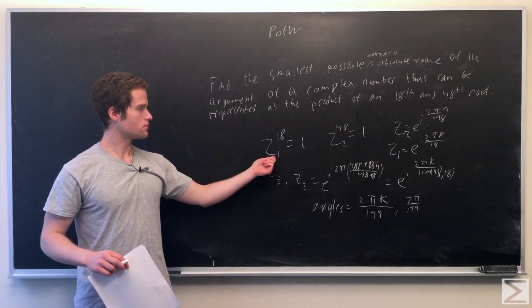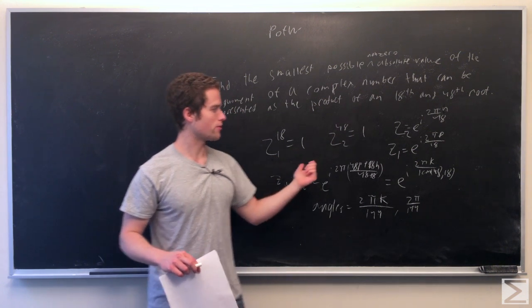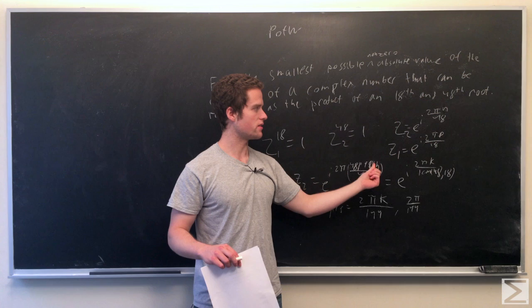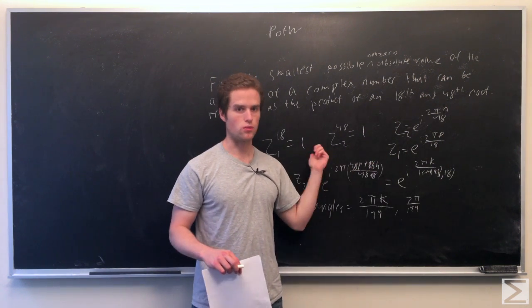So we have, say, z1 to the 18th equals 1, z2 to the 48th equals 1. So z1 we can represent as any complex number with a form e to the i 2 pi p over 18, where p is any integer. Clearly that to the 18th will give us 1.